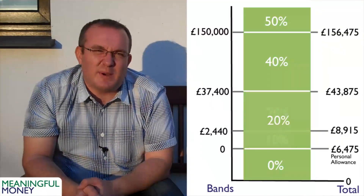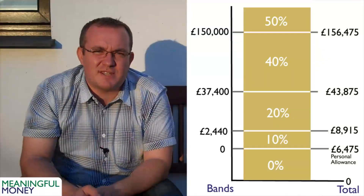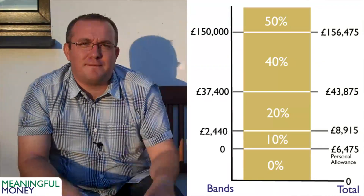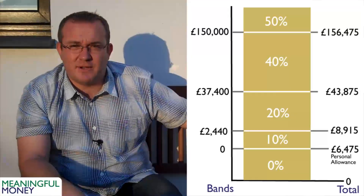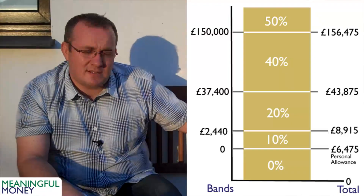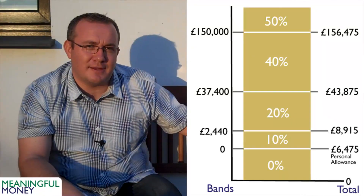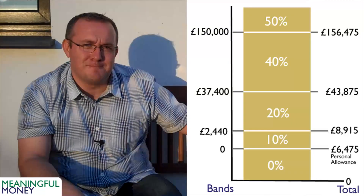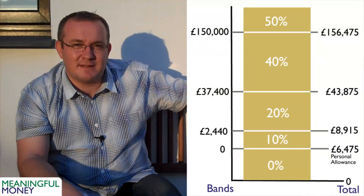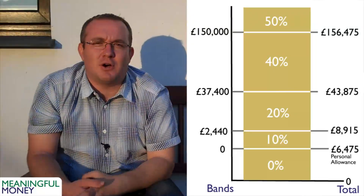Let's say you had about £150 million in the bank and you had some serious interest coming in. The first bit is tax-free, just like normal. But then, because it's savings interest, you get a 10% starting rate — very confusing, I know. Above that then you've got 20%, 40%, and 50% at the top.